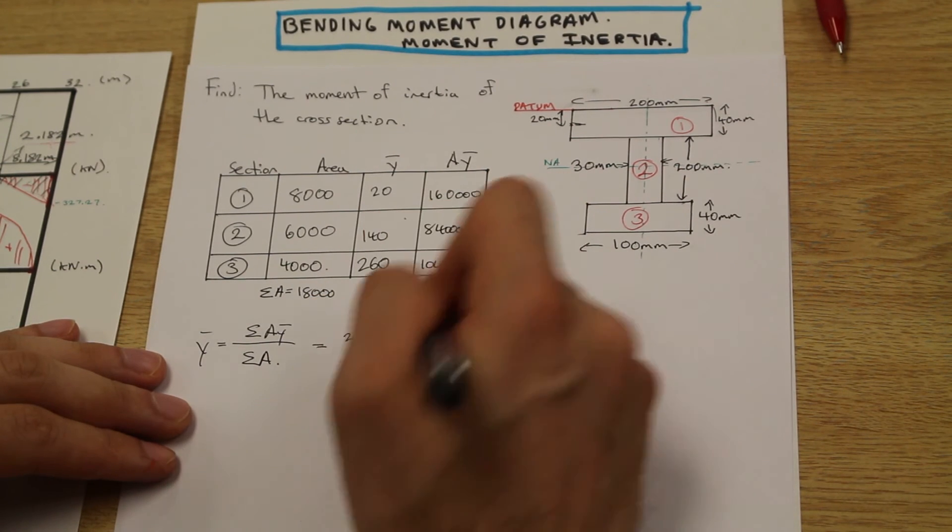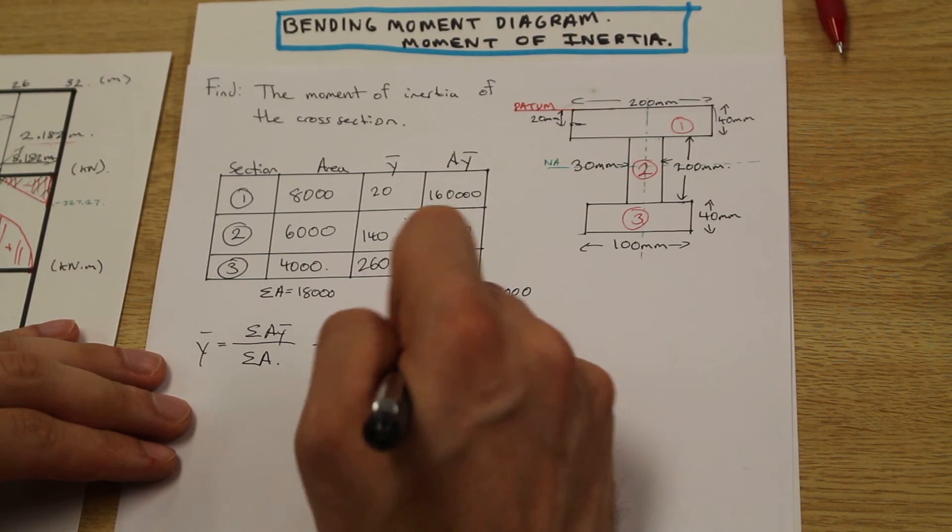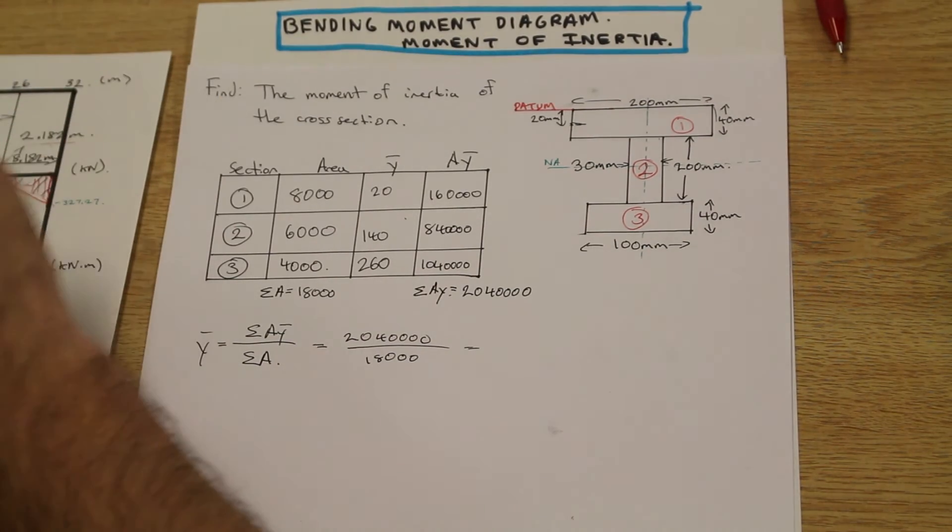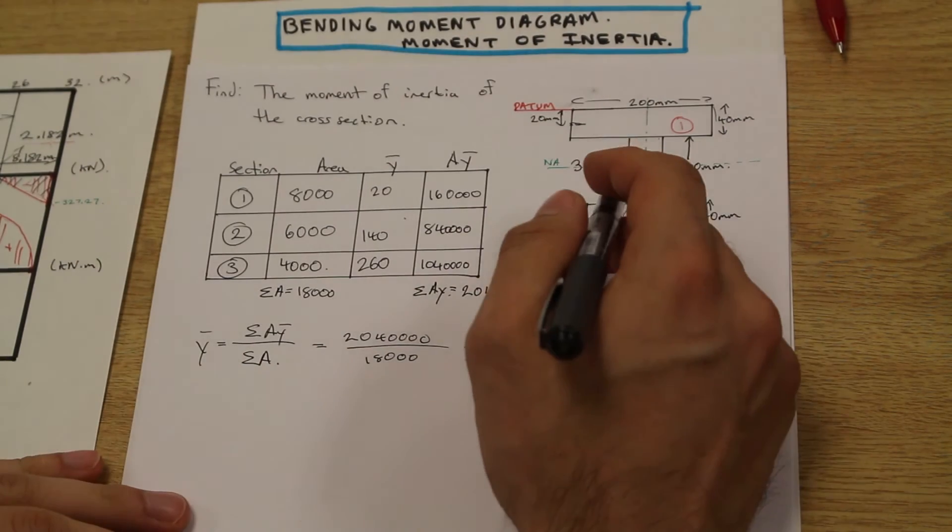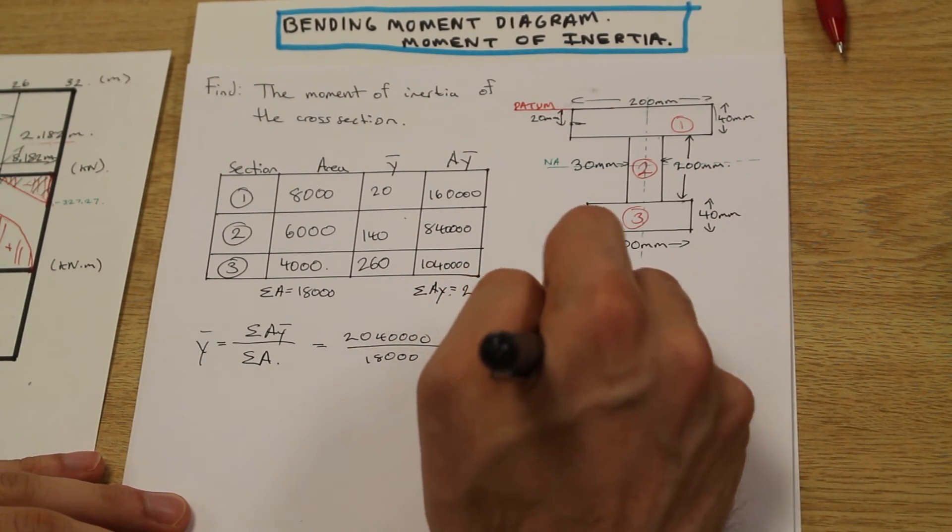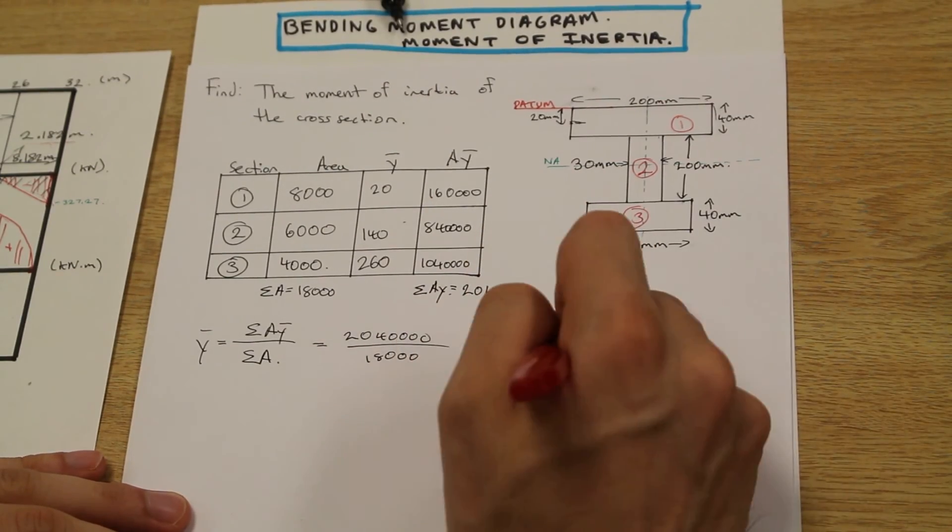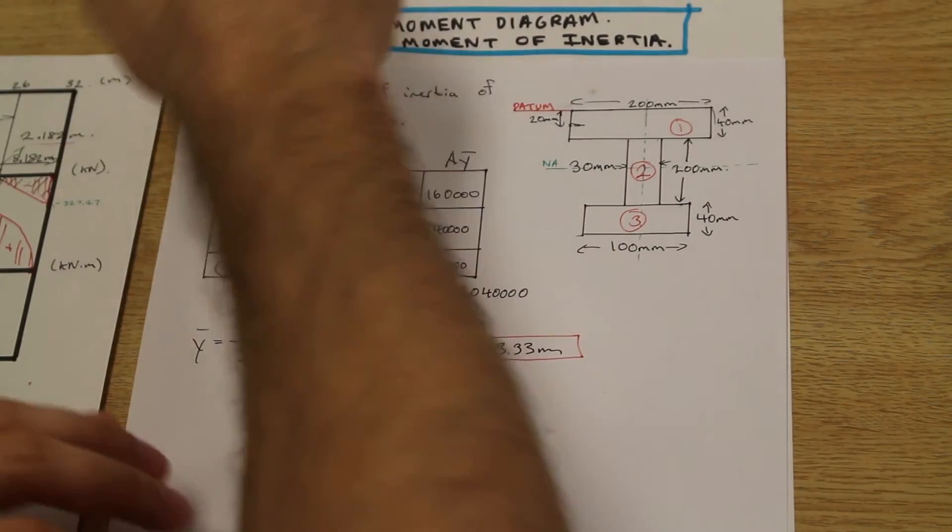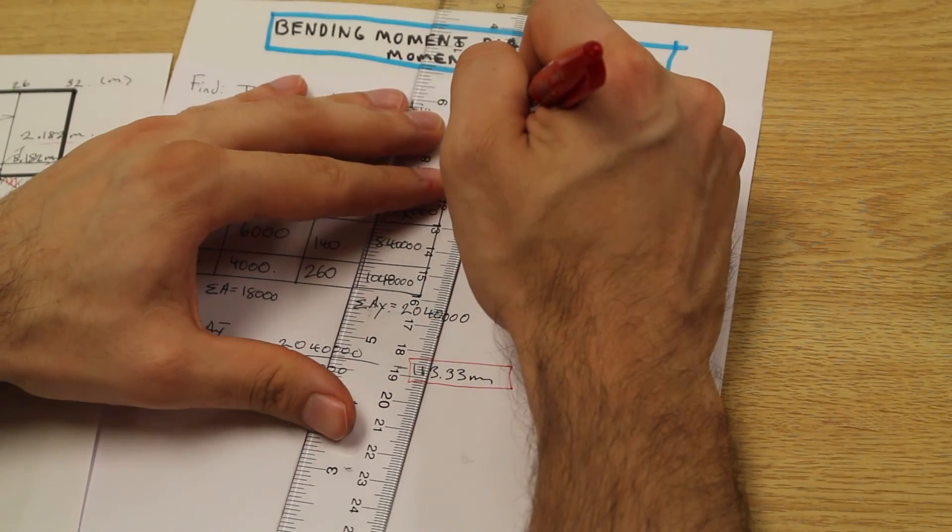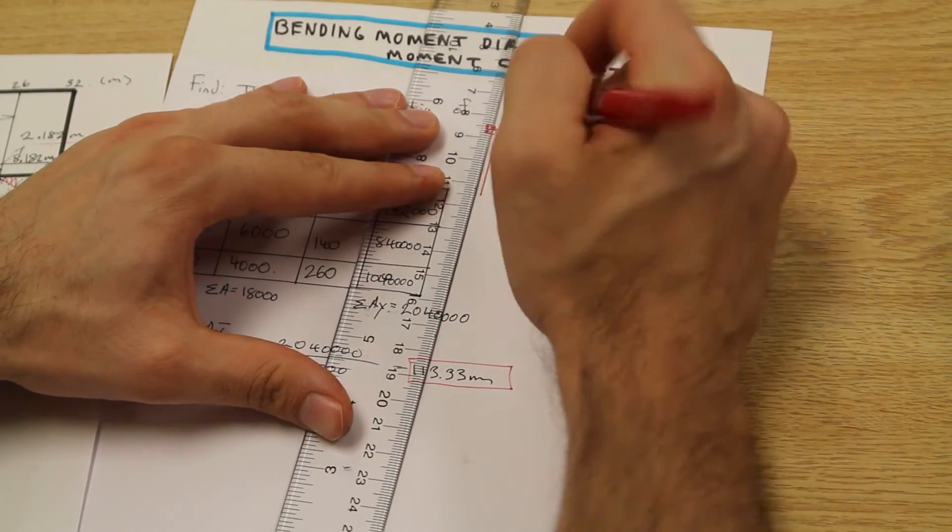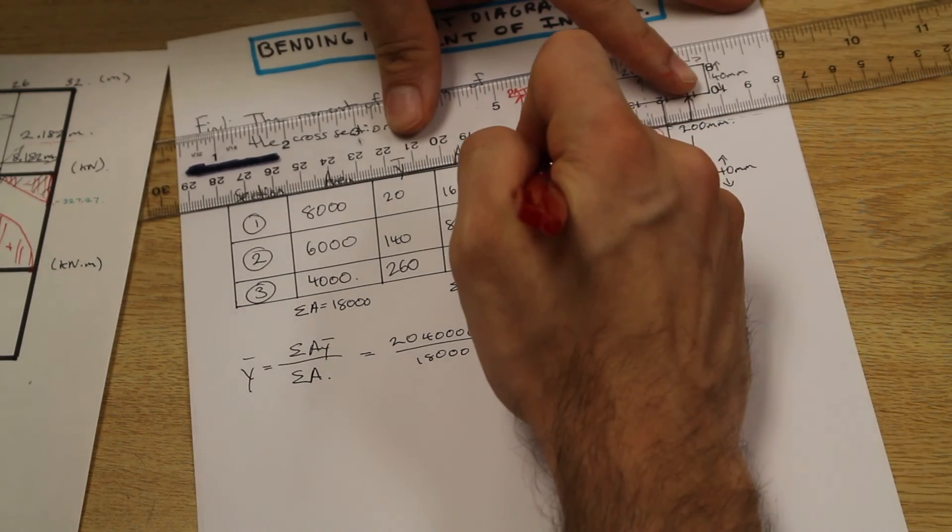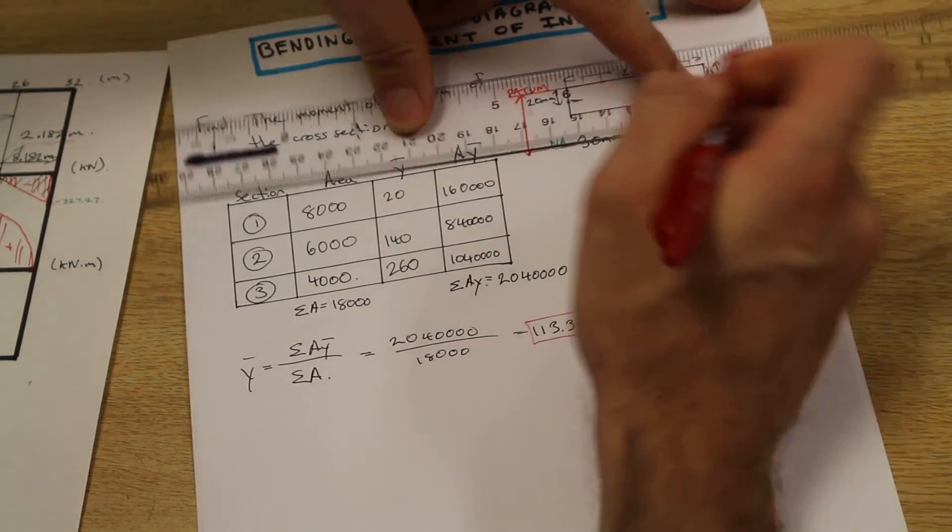What do we have? We have two million forty thousand over 18,000, and that's going to give us 133.33 millimeters. What does that mean? Well, 133.33 millimeters from the datum going downwards is the location of our neutral axis. Then by our powers of deduction...